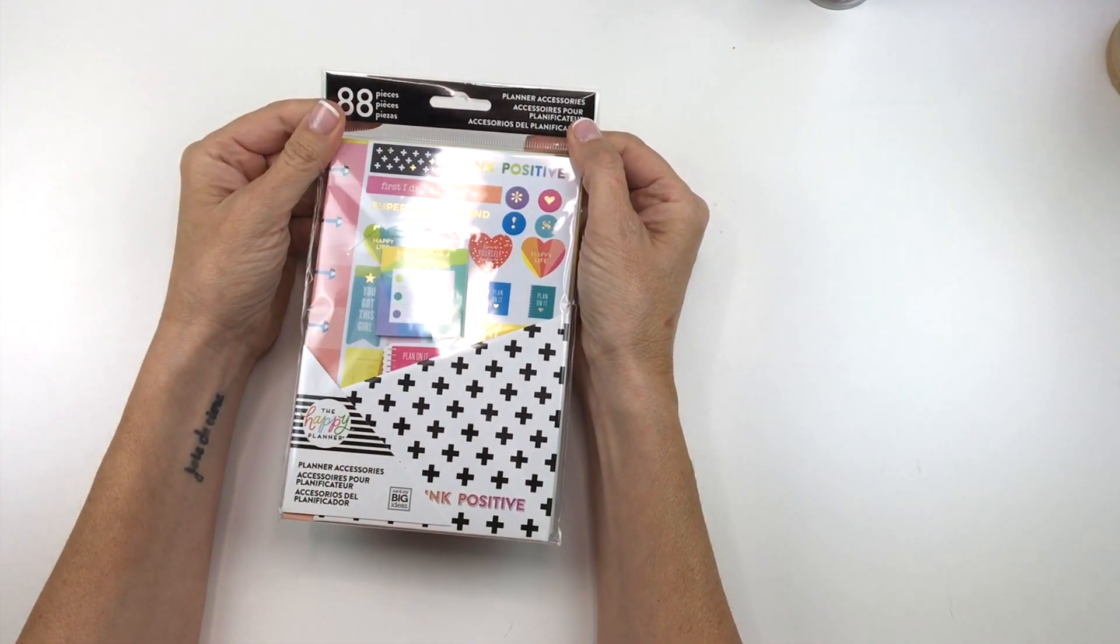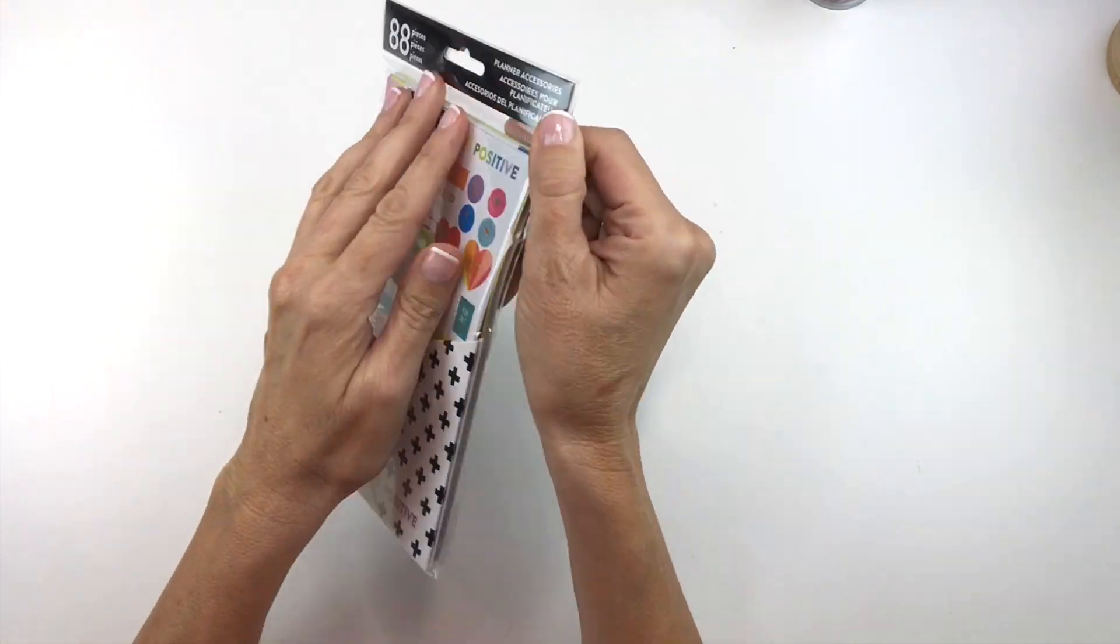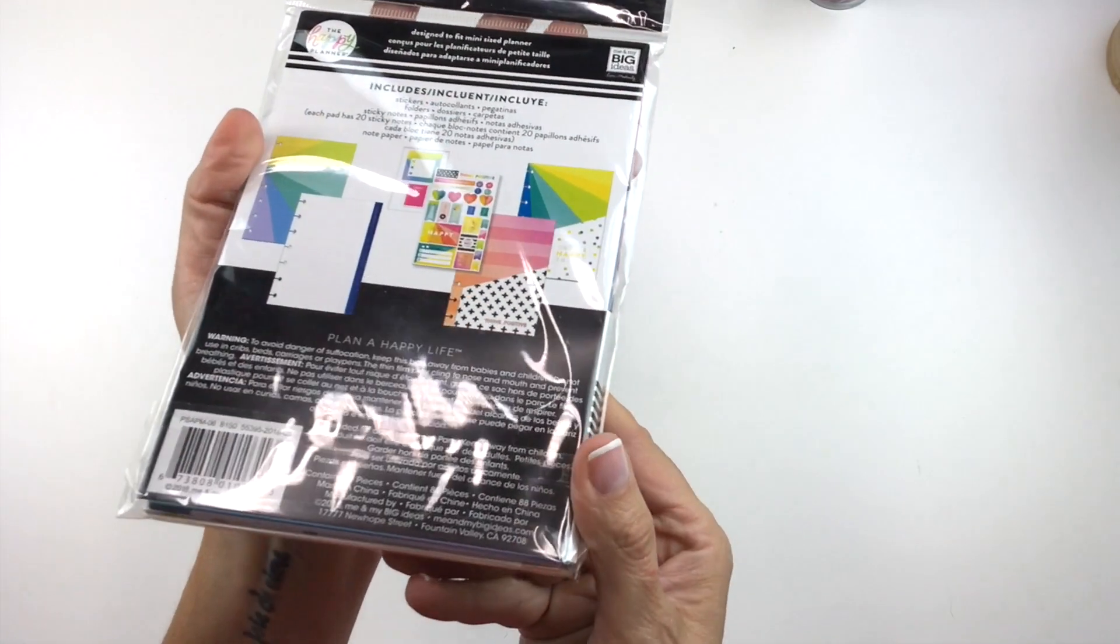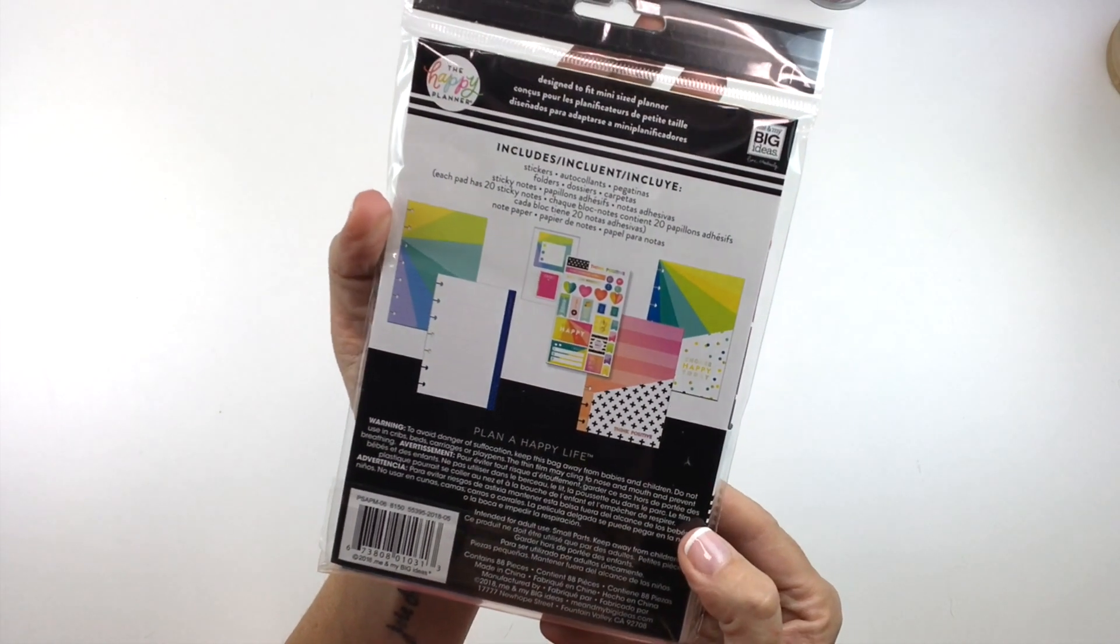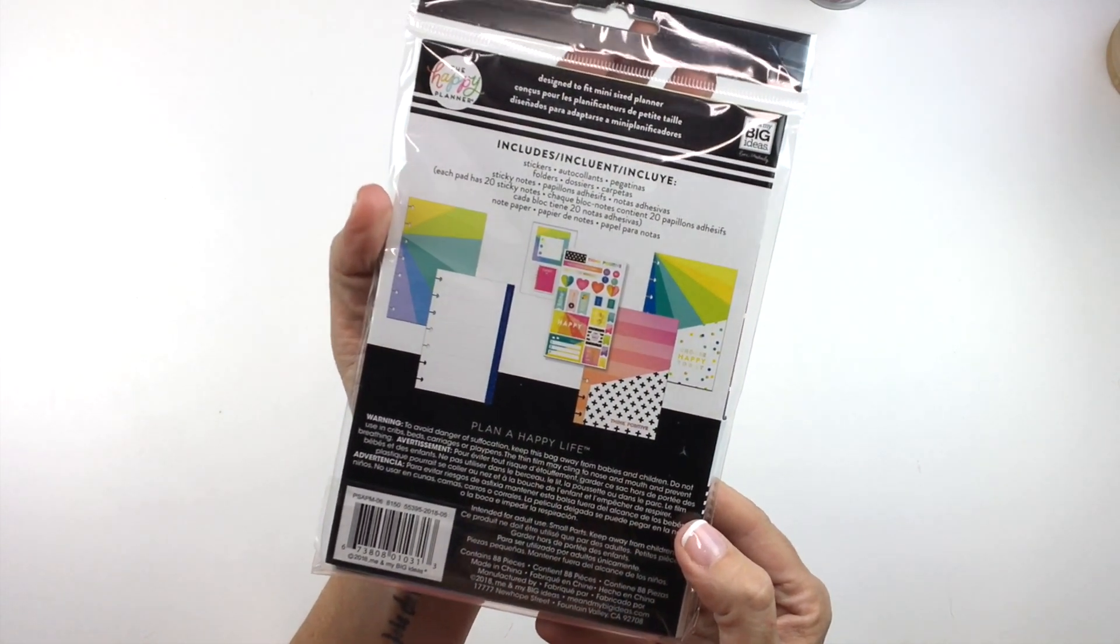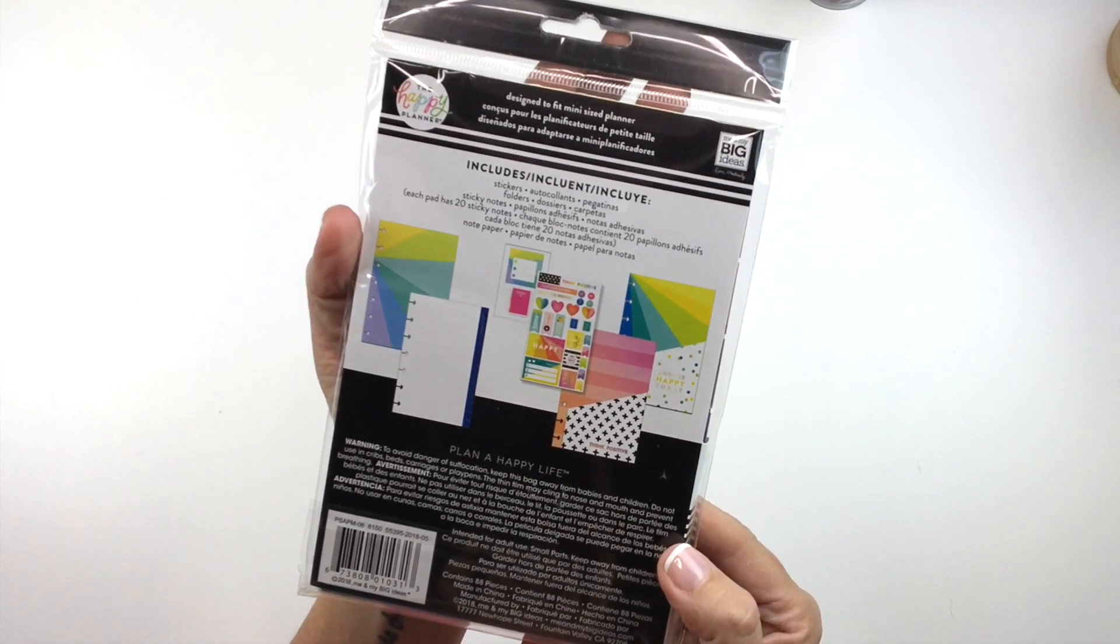Here's a planner accessory pack for the mini. There's what's inside. We have like stickers and sticky notes and folders and notepaper.